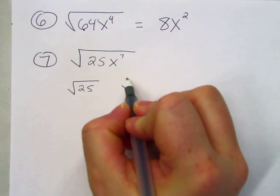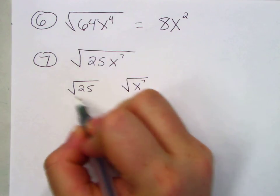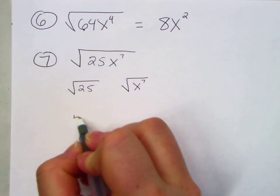I like to break up the variables. Now this is easy. What is that? What's the square root of 25? Just 5.